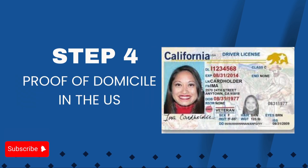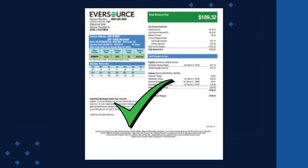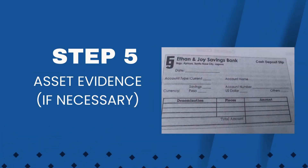Step four: Proof of domicile in the US. The joint sponsor or co-sponsor must show that they live in the United States. Acceptable proof includes a lease agreement or mortgage statement, utility bills in their name, a valid US driver's license or state ID, and employer records showing US employment. This proves that the sponsor maintains a primary residence in the US.